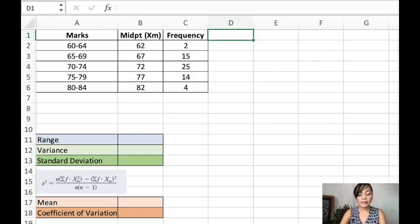Now we'll get the f multiplied to xm and the f multiplied to xm raised to 2, the midpoint raised to 2.